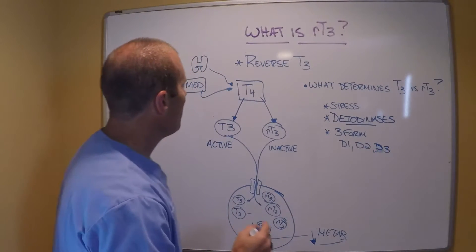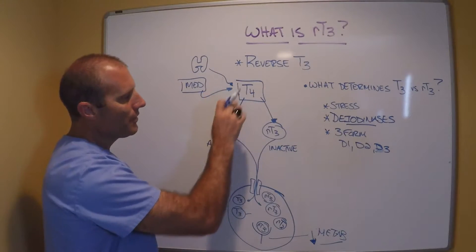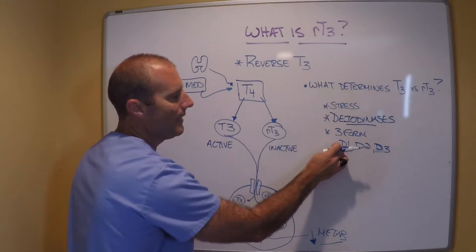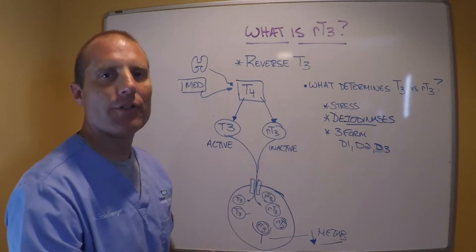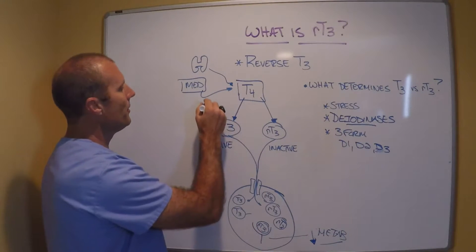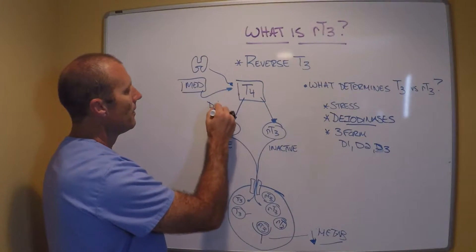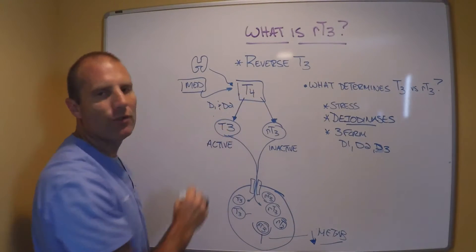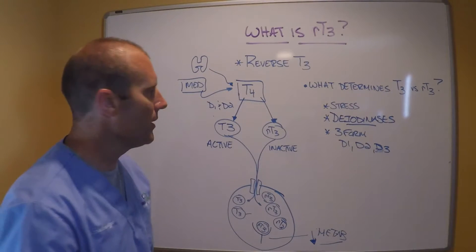And primarily, the concentration of these diodenase enzymes is different in different tissues in the body. But to keep it simple, D1 and D2 will convert T4 to active T3 in most tissues.